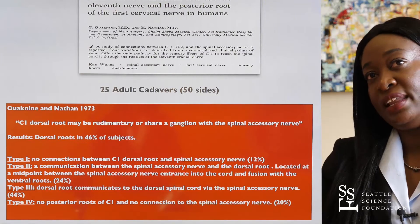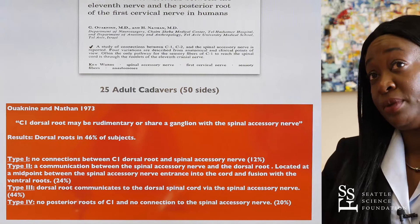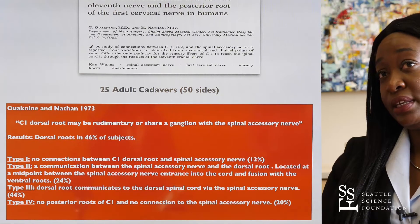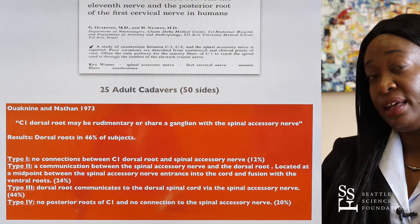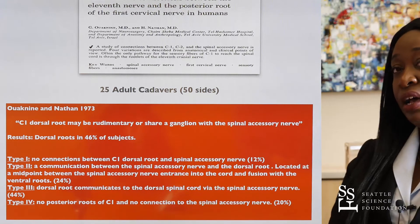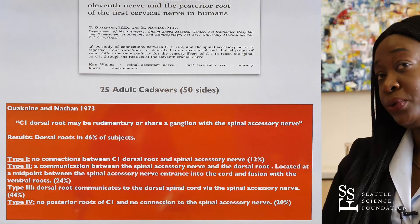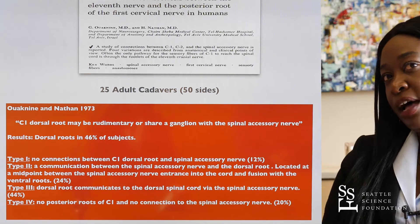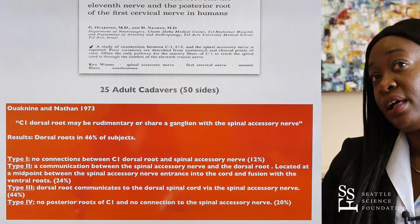A study by Ognin and Nathan going back to 1973 examined 25 adult cadavers, amounting to 50 sides, and showed that the C1 dorsal root may be rudimentary or can share a ganglion with the spinal accessory nerve (cranial nerve 11). Some have concluded that this shared ganglion has no sensory component but instead houses proprioception for the spinal accessory nerve. His study concluded that the dorsal root was present in approximately 46 percent of subjects, and he proposed a classification system of five types of association between the C1 nerve and the spinal accessory nerve.